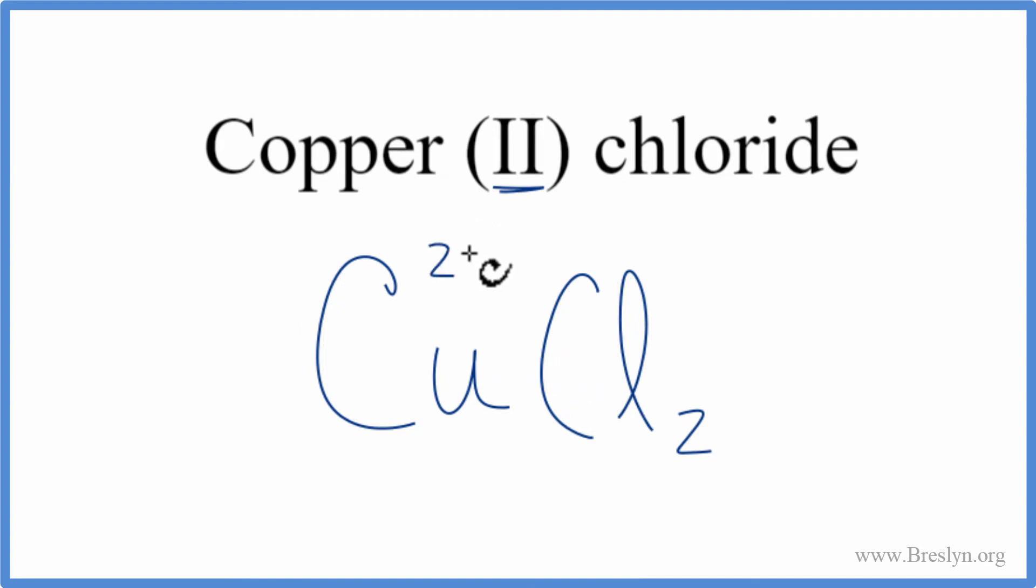So copper, we said that was 2+ because of the Roman numeral. We looked on the table. Chlorine, 1-. So we have two chlorine atoms. 2 times 1-, that's 2-.